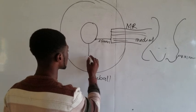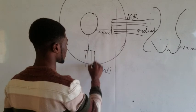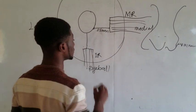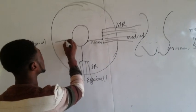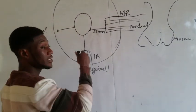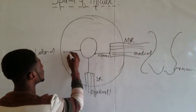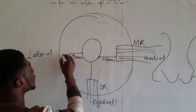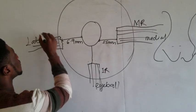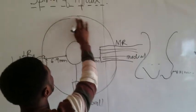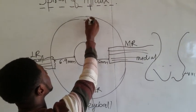So we have the inferior rectus muscle here. The lateral rectus inserts at 6.9 mm from the corneoscleral junction. So this is where the lateral rectus muscle is inserted. And the superior rectus is inserted at 7.7 mm from the corneoscleral junction.